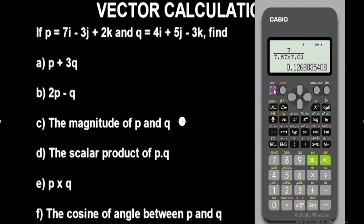To find the inverse cosine, press Shift then the cos button for cos⁻¹, then press Ans to use the previous result, close the bracket, and press equals. This gives you the cosine of the angle between the vectors: 82.71 degrees.